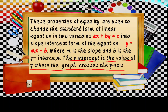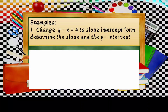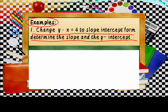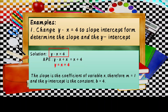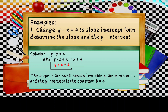Let us try this example. Number one: change Y minus X equals 4 to slope-intercept form and determine the slope and the Y-intercept. Starting with Y minus X equals 4, we use the Addition Property of Equality — we add X to both sides. Y minus X plus X equals X plus 4. Since negative X plus X cancels, we get Y equals X plus 4.